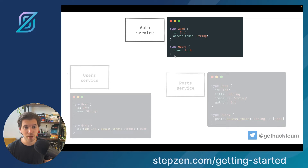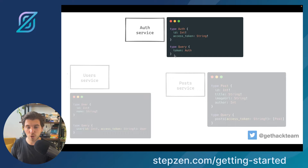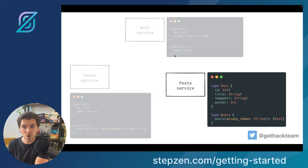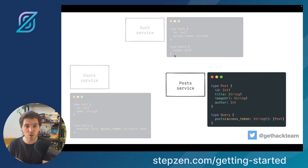If you look at Auth, you can see it has a basic schema — it has a type definition, it has a query — meaning you can query this microservice independently of every other microservice. The same can be said for Users: you get an ID, a name, and probably much more. For Post, you have an ID, a title, image URL, author — you may want to make connections between users and posts, or posts and authentication — and everything is possible if you bring together these graphs with GraphQL.